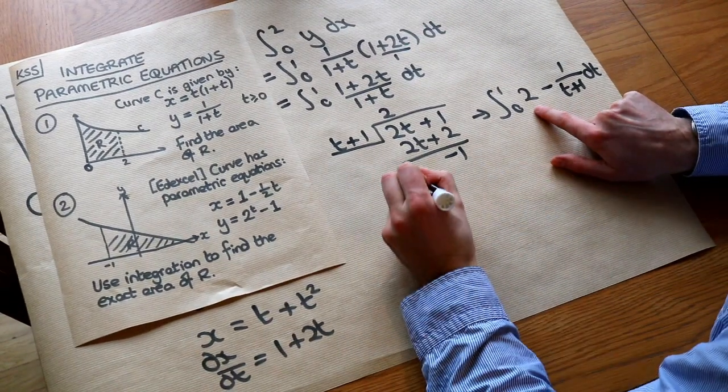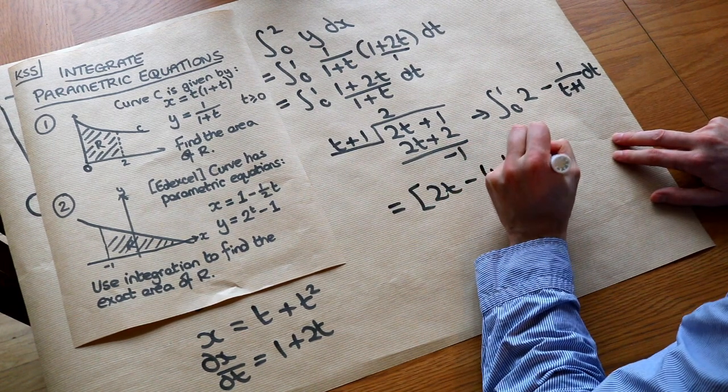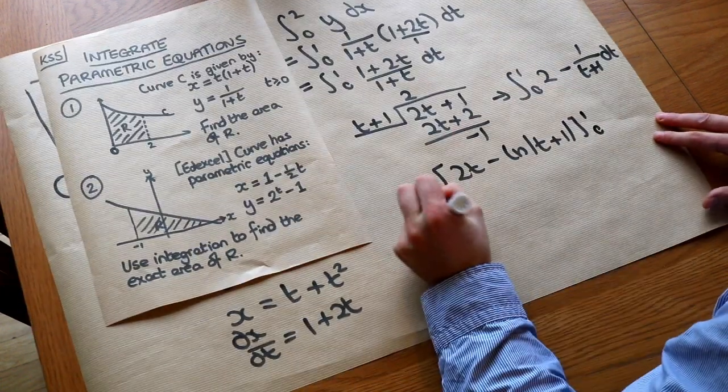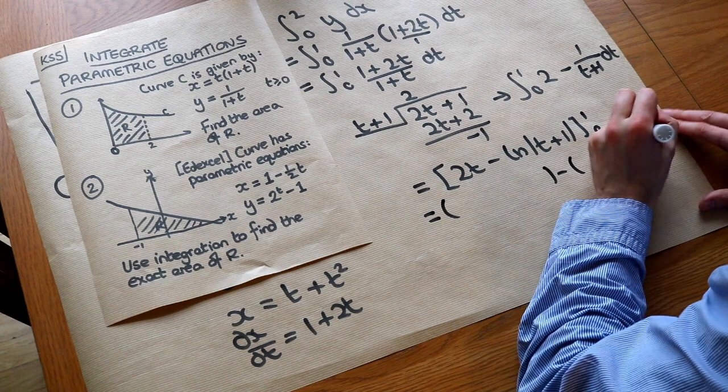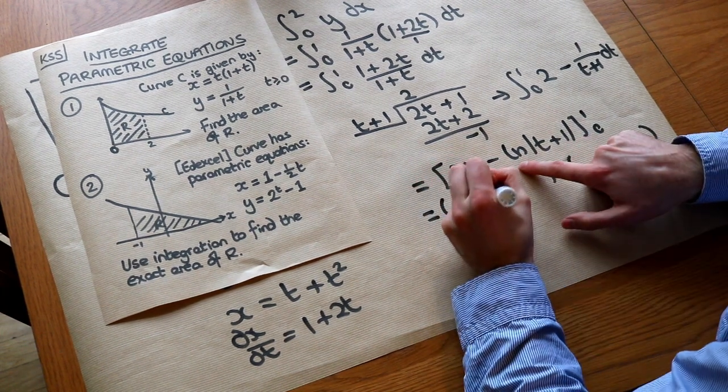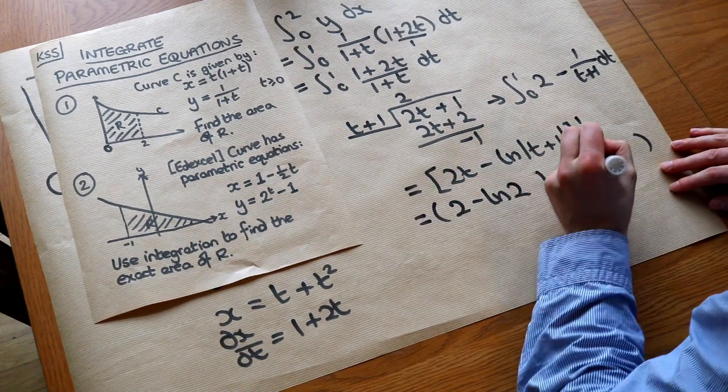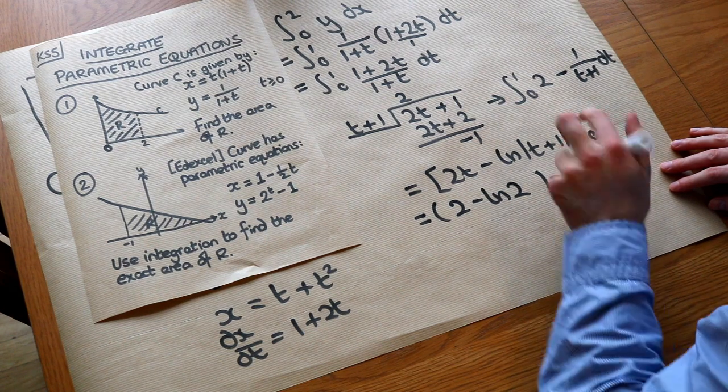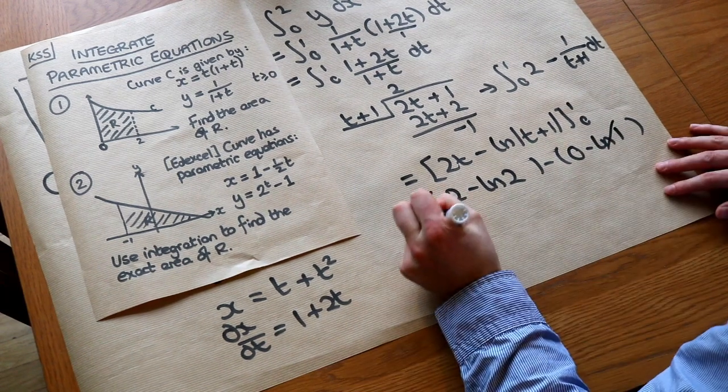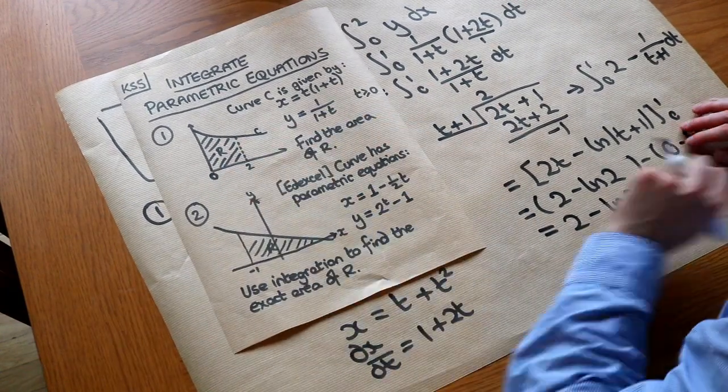That's going to just be 2T, and that's going to integrate to ln of (T plus 1), and we have bounds of 1 and 0. So let's do two normal brackets. If we sub in the 1 into this expression, we get 2 minus ln of (1 plus 1), which is ln of 2. If we sub in 0 into this, this is 0 minus ln of (0 plus 1), ln of 1. Now ln of 1 is just 0, so this whole bracket disappears, and we're left with 2 minus ln 2. So that's the area of this region here.